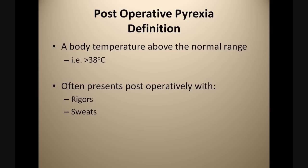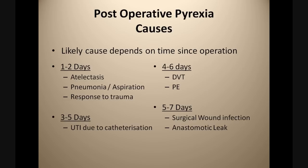Our final topic is post-operative pyrexia. This is a very common complication post-operatively with many different causes. It is defined as a body temperature above the normal range, typically 38 degrees Celsius. Patients often present with rigors, sweats and fever. The cause depends on the time from the operation. One to two days post-operatively, patients may develop atelectasis from ventilation and incomplete lung expansion due to abdominal pain. There may be evidence of pneumonia or aspiration on chest X-ray, or it may be a response to the localised trauma from the operation leading to a systemic inflammatory response.